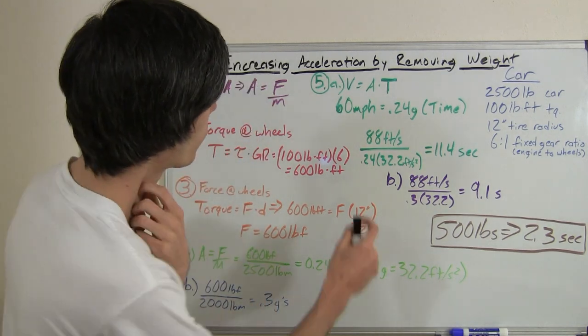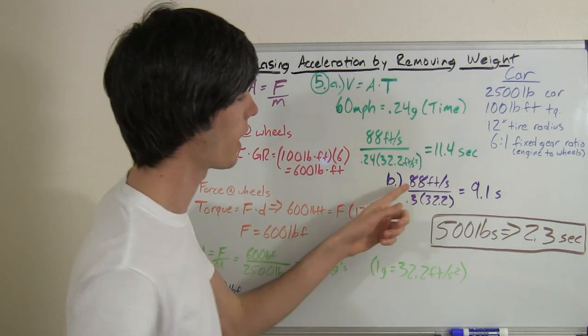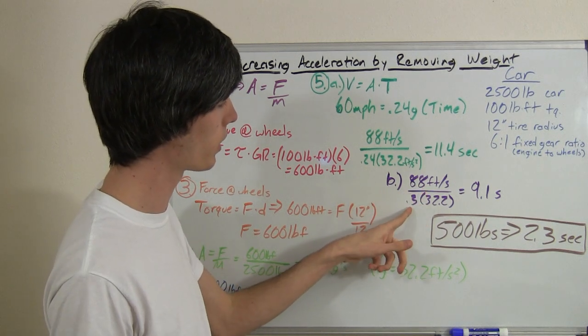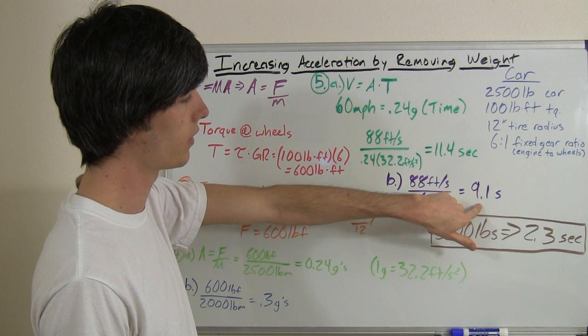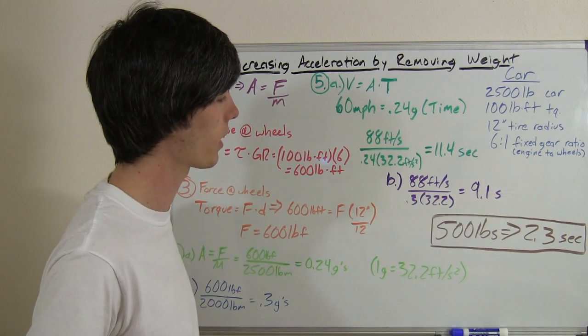All right, so if we bring that back into this equation here, we've got 88 feet per second divided by 0.3 g's, or 0.3 times 32.2. That gives us a 0 to 60 of 9.1 seconds.